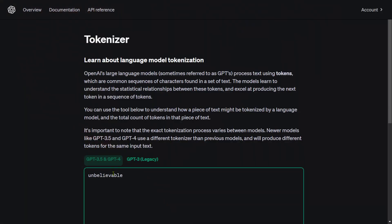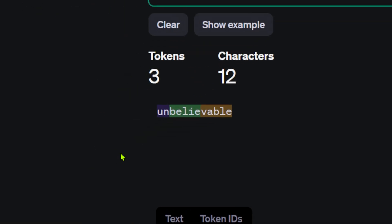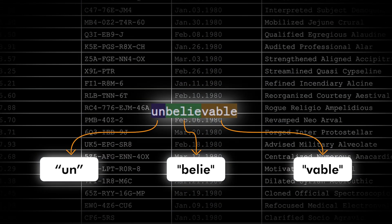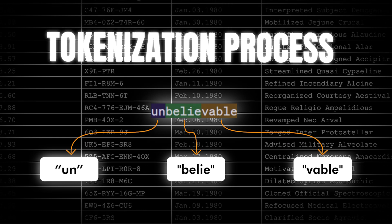For example, the word 'unbelievable' might be split into tokens like 'un', 'believe', and 'able'. We break them down into familiar components based on how often they are repeated in the training data, which we call the tokenization process.